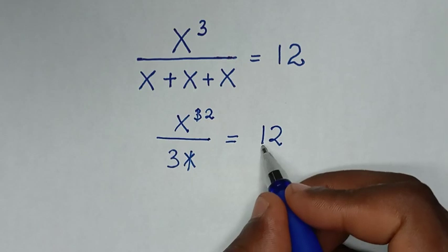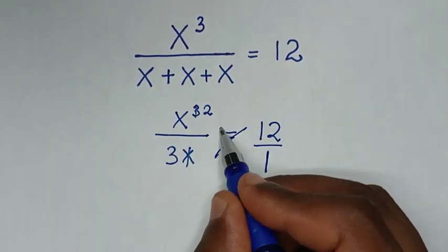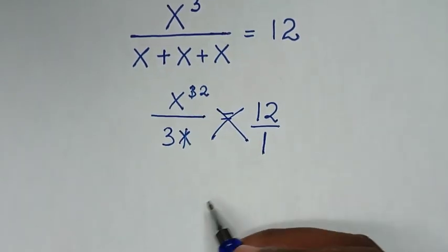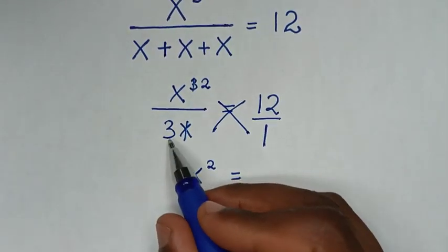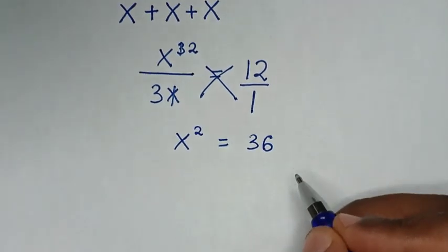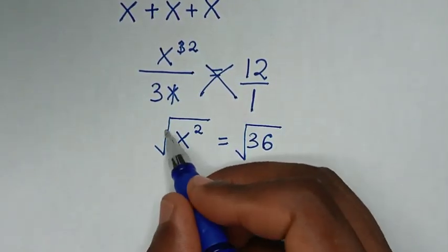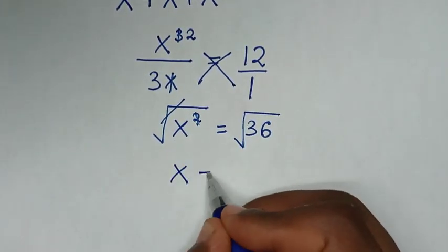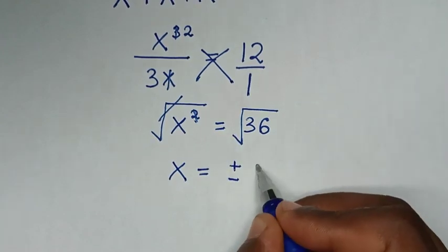Then 12 is the same as 12 over 1, so we'll cross multiply. It will be x square times 1 is x square, equal to 3 times 12 is 36. Then we'll apply square root on both sides, so the square root will cancel the square, and it will be x is equal to square root of 36.